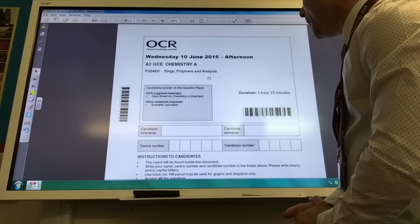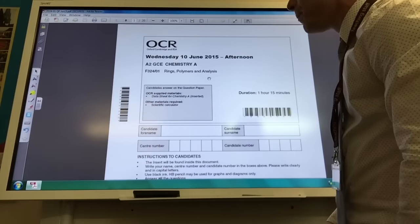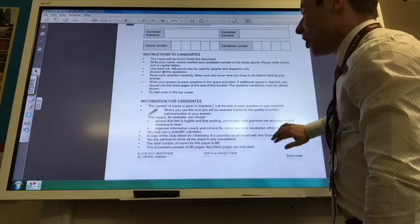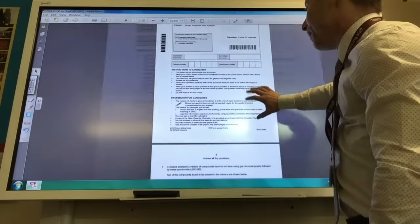So today we're going to go through the June 2015 paper on aromatic rings, polymers and analysis. Let's make a start.